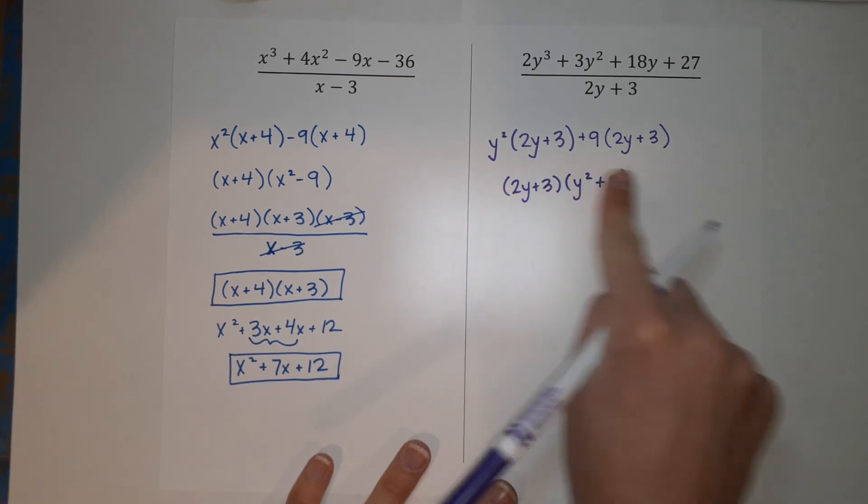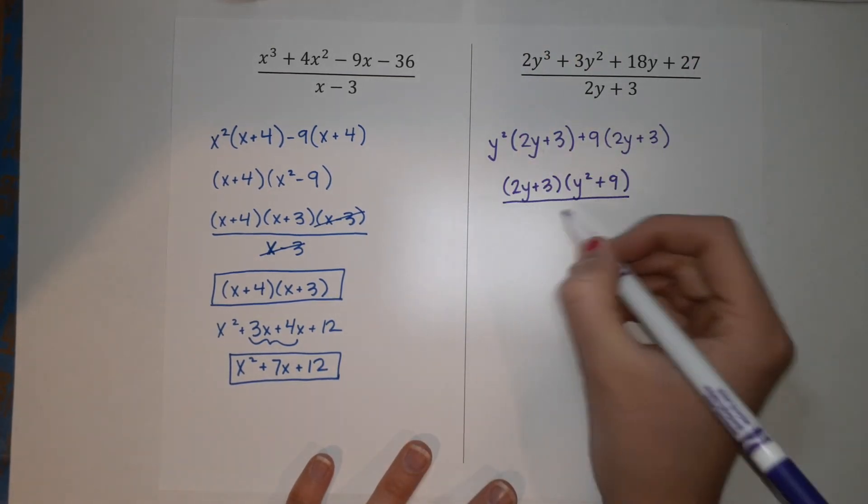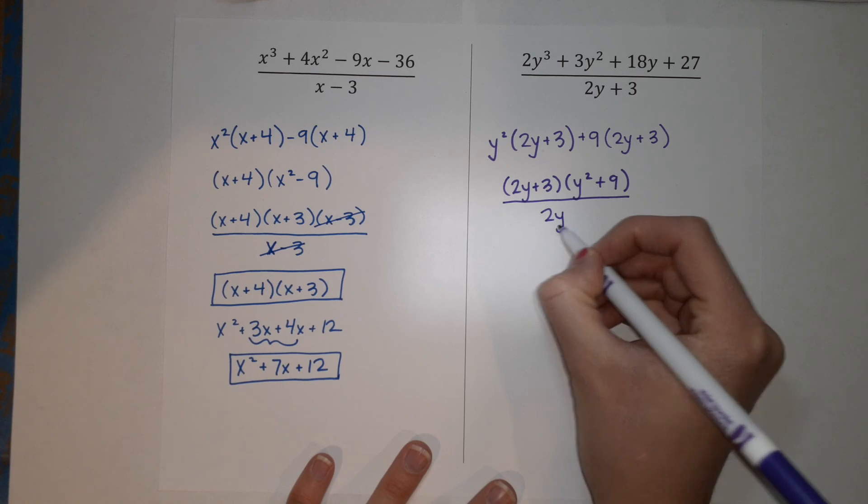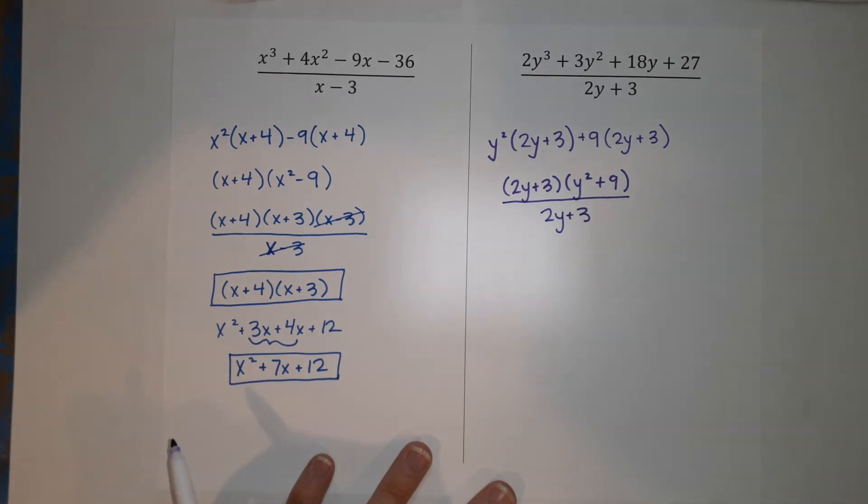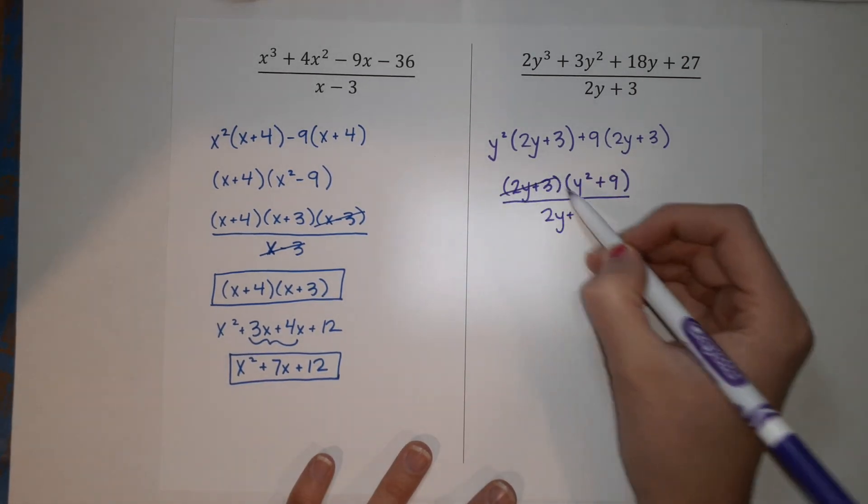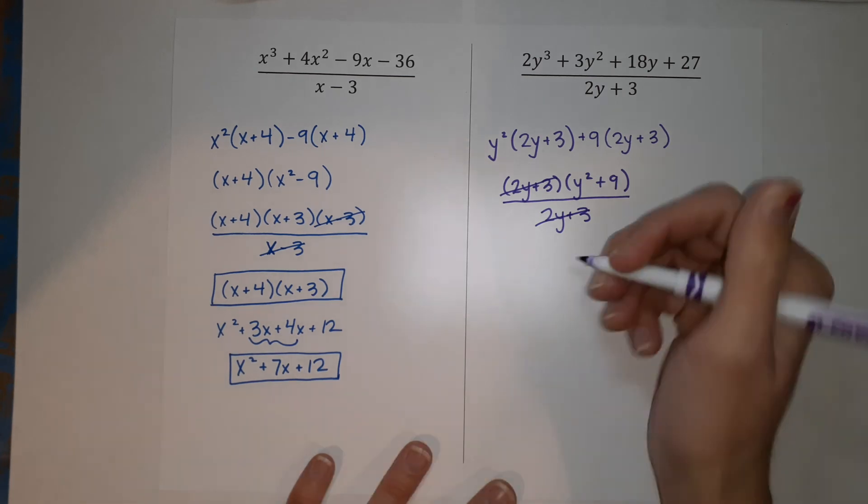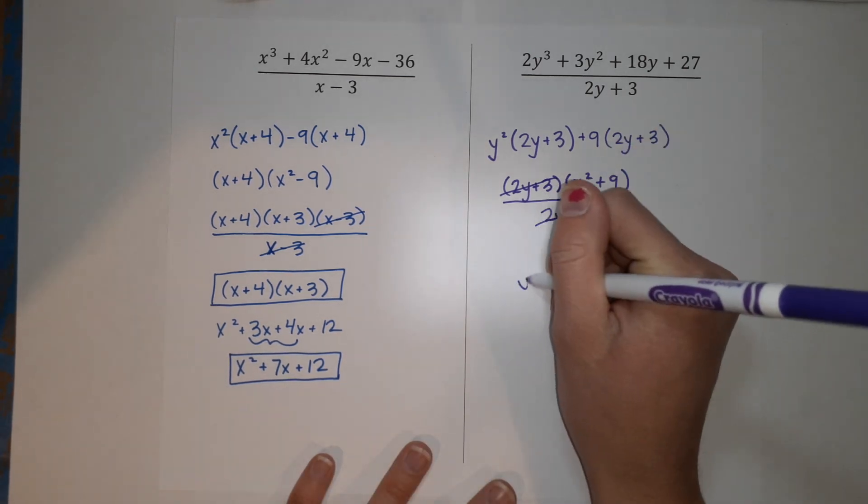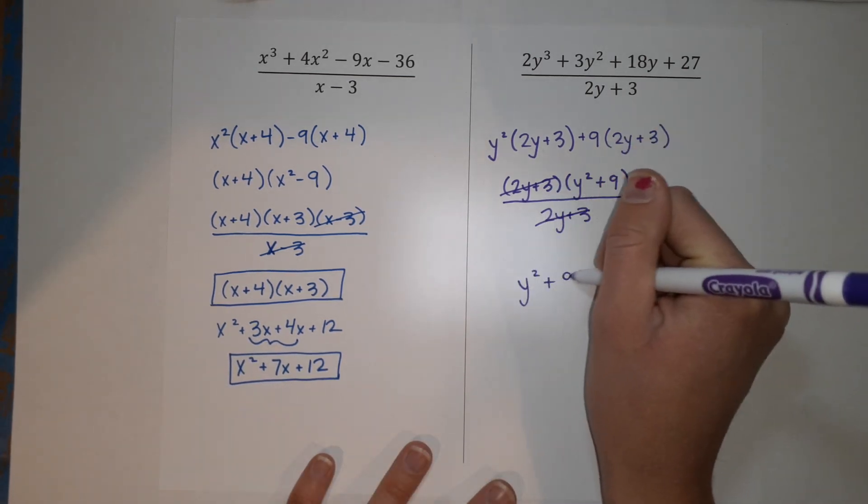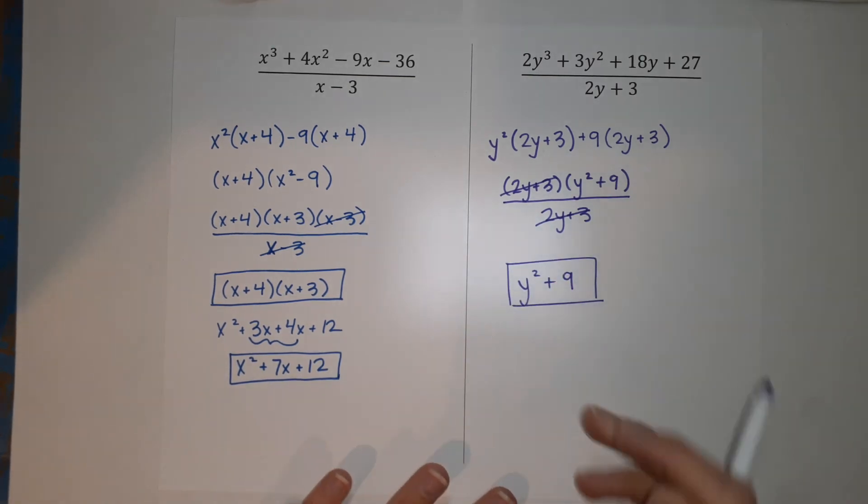So this is my numerator factored. So I'm going to write it back over the two y plus three. So those cancel and I'm just left with that y squared plus nine. All right. You're done. Check out those other videos. If any of that factoring was kind of like what, hopefully you can get your homework done. Go to bed, have dreams of math and imaginary numbers.